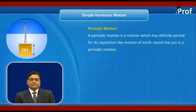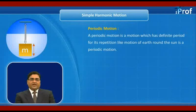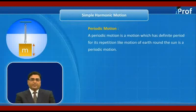In periodic motion, a moving particle experiences a force towards a fixed point which may or may not be on the path of motion. When Earth rotates around the Sun, the moving Earth experiences a force towards the Sun, which does not remain on the path of Earth. This is a case of periodic motion.